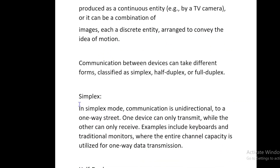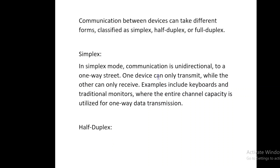Communication between devices can take different forms, classified as simplex, half-duplex, or full-duplex. In simplex mode, communication is unidirectional — like a one-way street. One device can only transmit while the other can only receive. Examples include keyboards and traditional monitors, where the entire channel capacity is utilized for one-way data transmission.